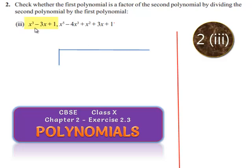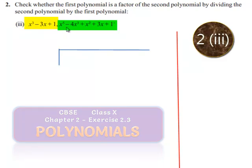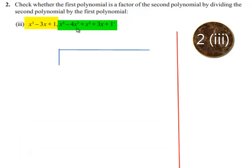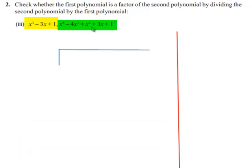Coming to the third bit, which is x³ - 3x + 1 and x⁵ - 4x³ + x² + 3x + 1. We need to divide the second polynomial by the first polynomial. The first polynomial becomes the divisor and the second polynomial becomes the dividend.